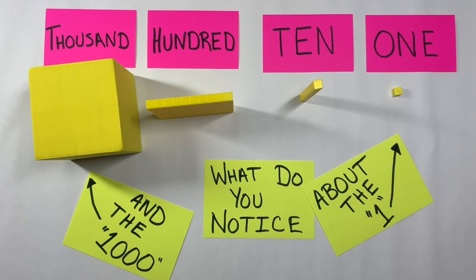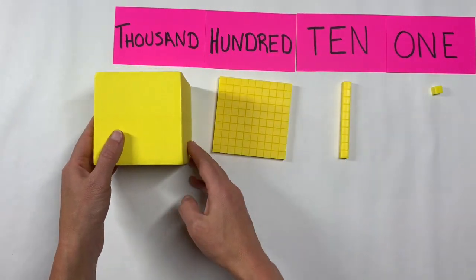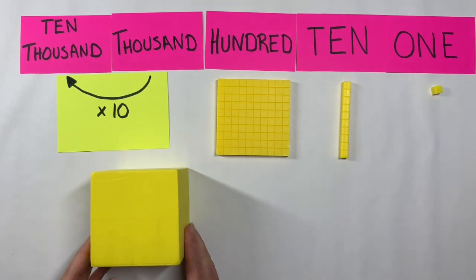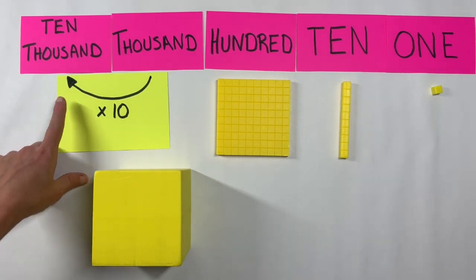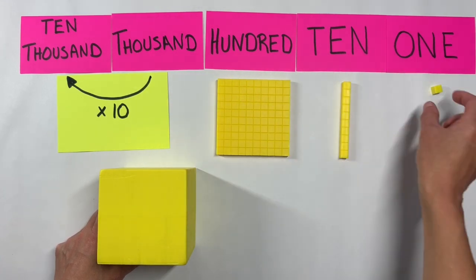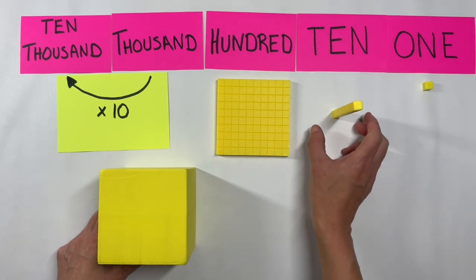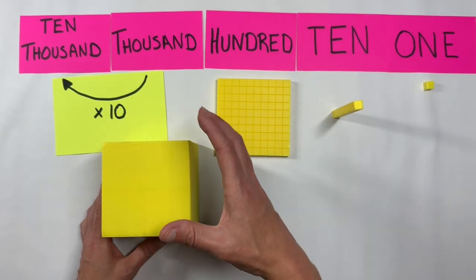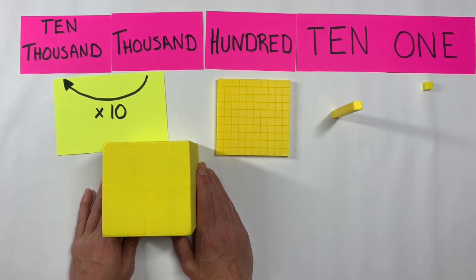Since the thousands is a larger version of our starting cube, we can go through the geometric pattern all over again. When we had a small cube and multiplied it by ten, we stacked it up to form a tall tower rod. Now with a large cube, we do the same thing: stack ten of these large cubes to form one large rod, which represents our ten thousands place. But before we continue, we're going to need some more room.